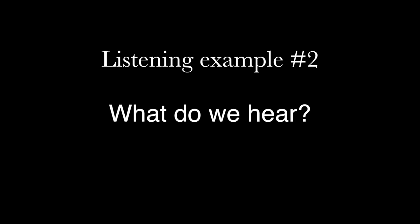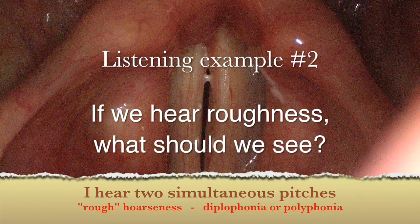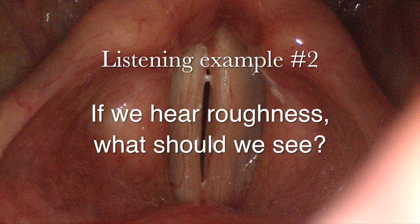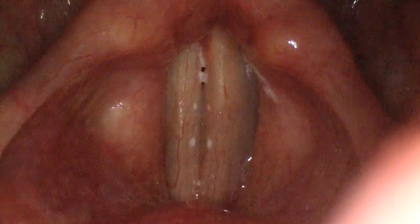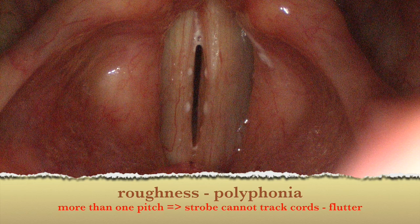Let's listen to another voice. I'm hearing two non-harmonic pitches simultaneously — that is, diplophonia, or some sort of polyphonia. So what should we see on stroboscopy? The strobe light is unable to track two pitches simultaneously, so we get an apparent fluttering of the vocal cords.